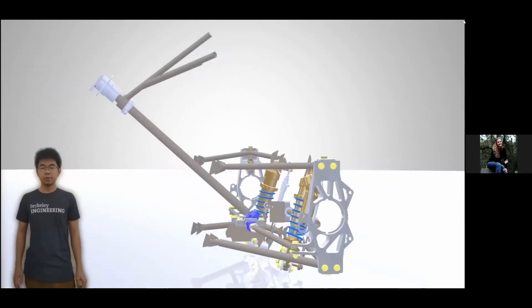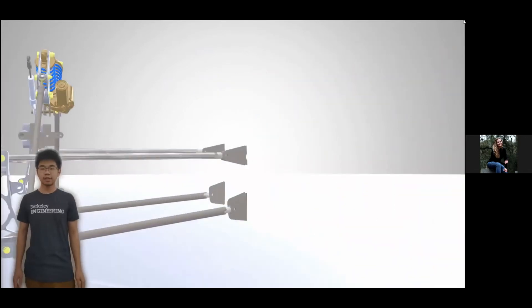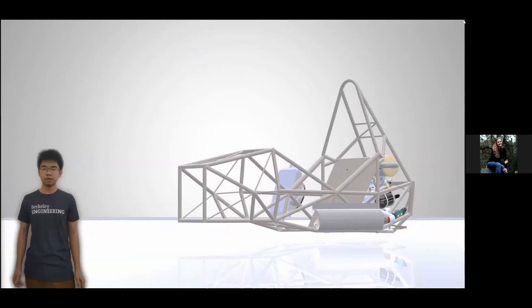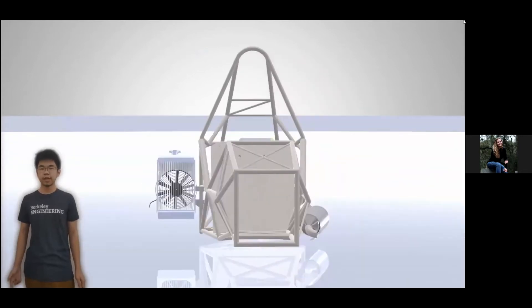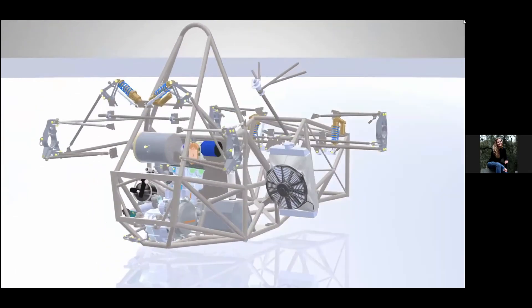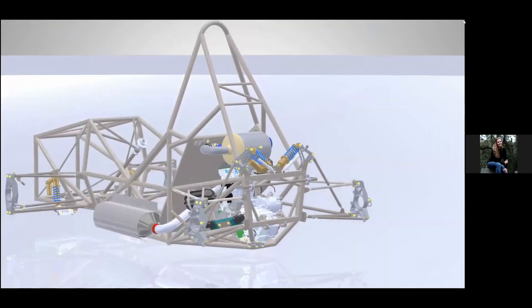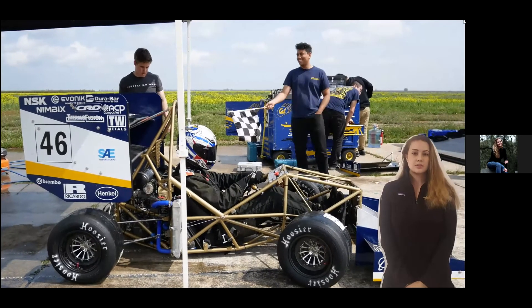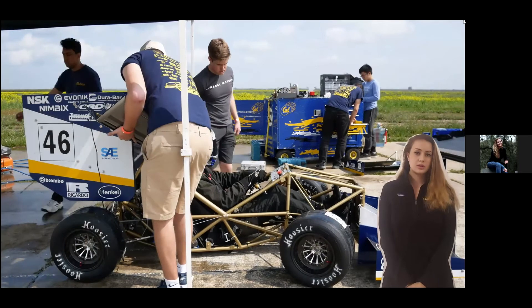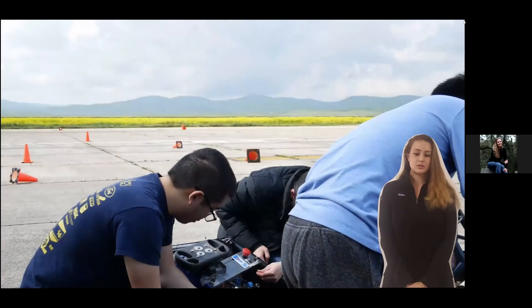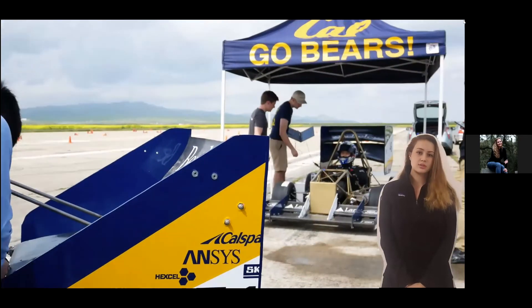Suspension makes the car turn. We design the connection between the steering wheel and the tires, use springs and shock absorbers to keep the wheels on the ground, and fine-tune the handling of the car. Our subsystem works closely with vehicle dynamics to analyze the forces on the car during acceleration, cornering, and braking in order to determine the optimal suspension geometry. Vehicle dynamics helps us collect and analyze data from this year's car, creating comprehensive computer simulations that enable us to optimize our design.